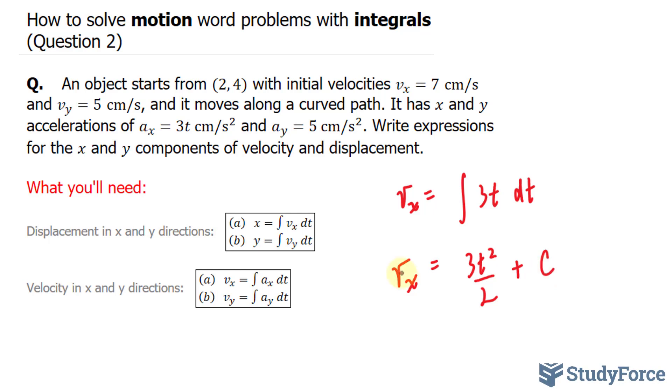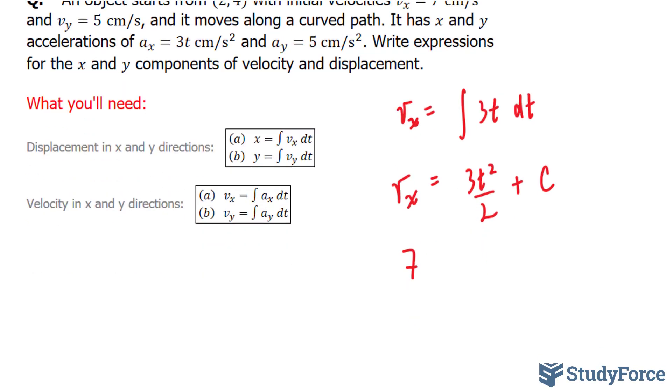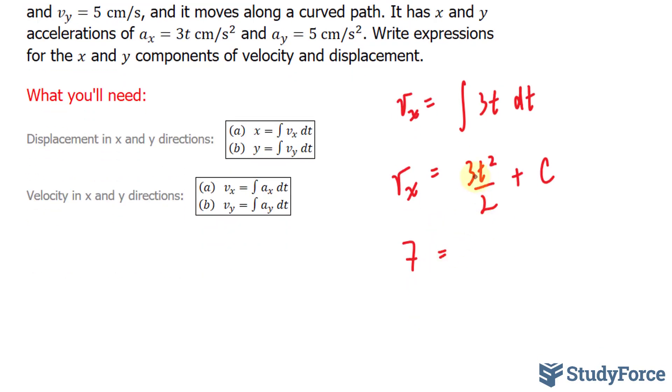Now, we've been told what v_x is. It's 7. So I'm going to replace this with 7, and I'm also going to replace t with 0 because this is the initial velocity. So the initial velocity will be at time 0. Let's go ahead and do that. 7 equals 3 times 0 over 2. That's 0.